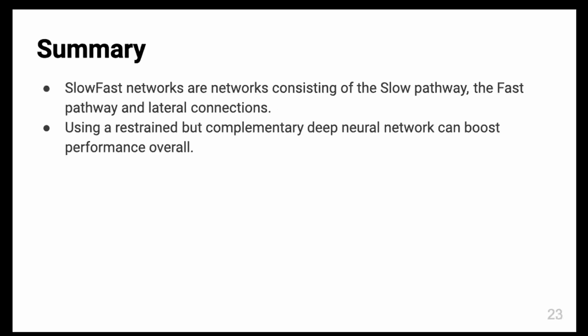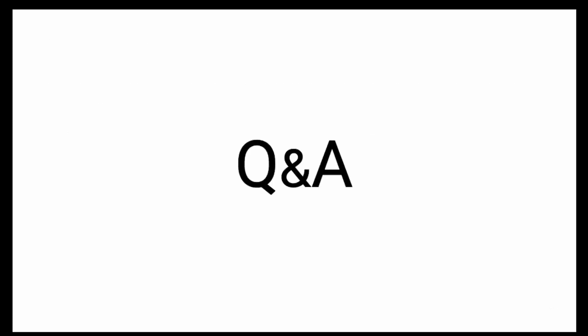For summary, SlowFast networks consist of the slow pathway and the fast pathway and lateral connections. I think this is an important message we can take from the paper: using a restrained but complementary network can boost the performance over a core system. Thank you for listening.